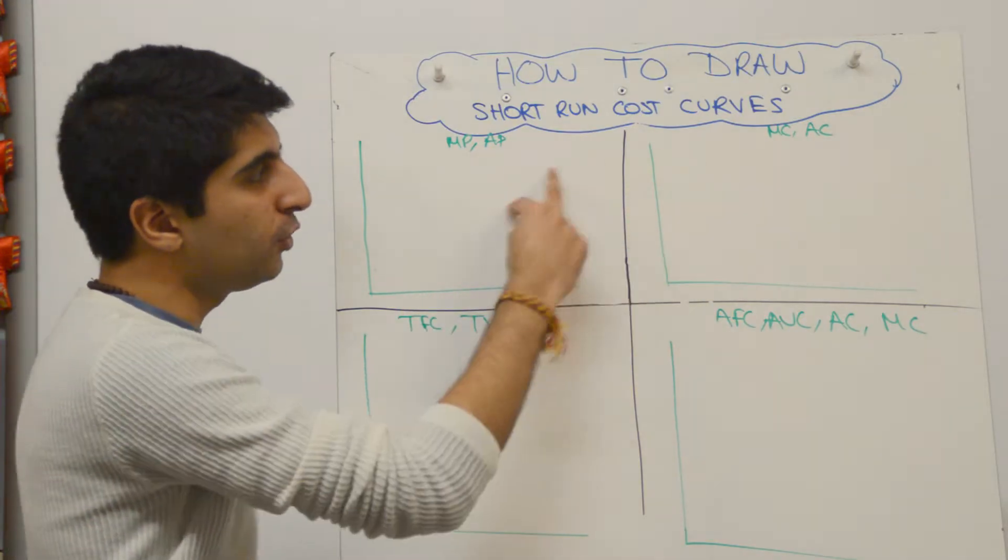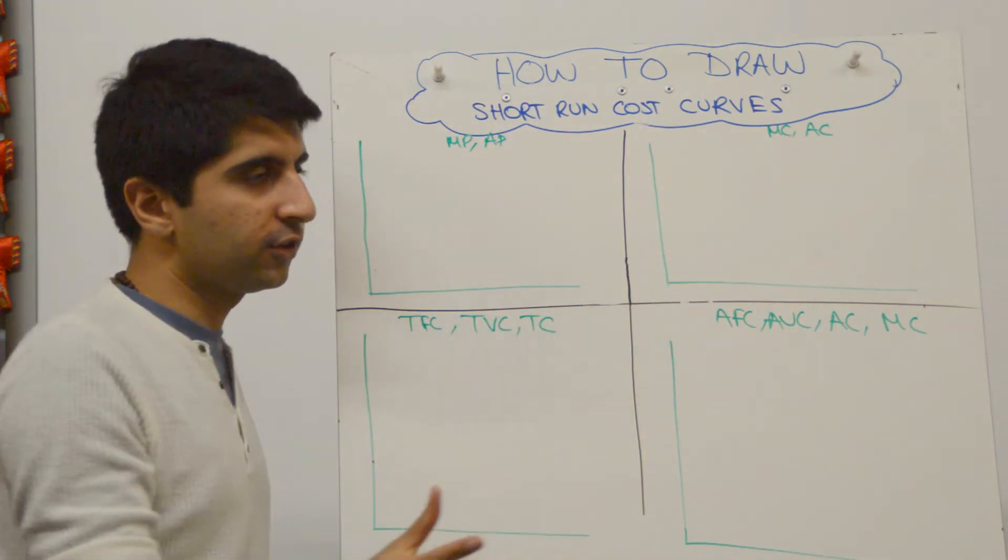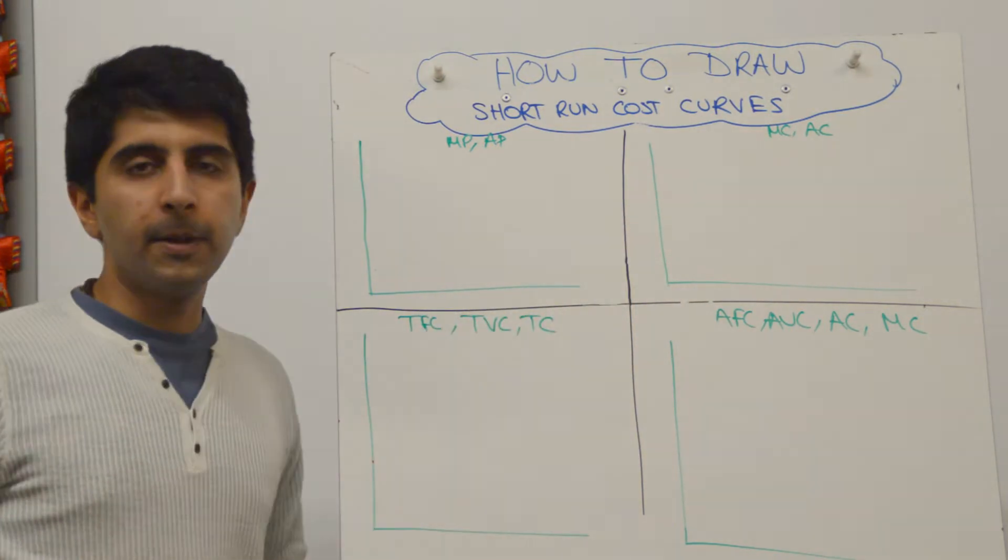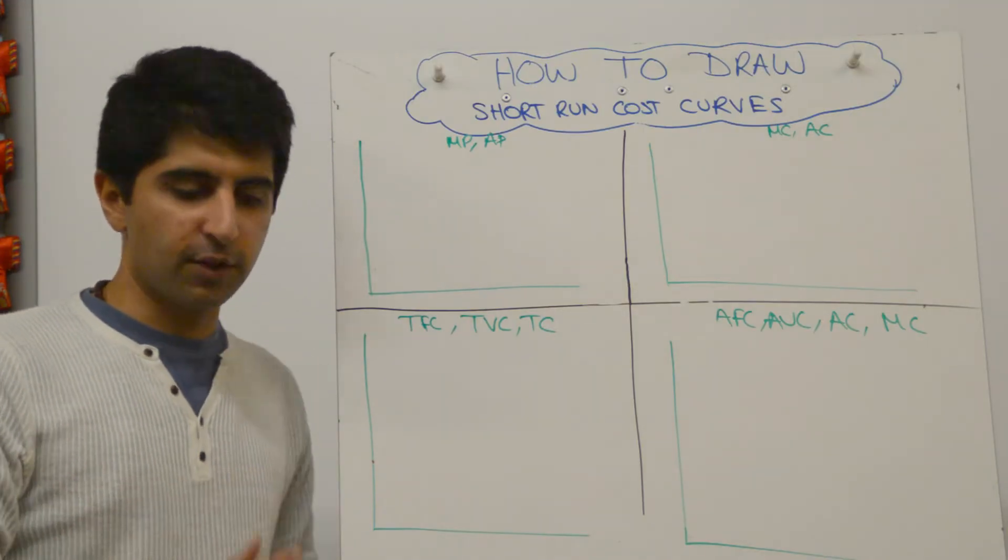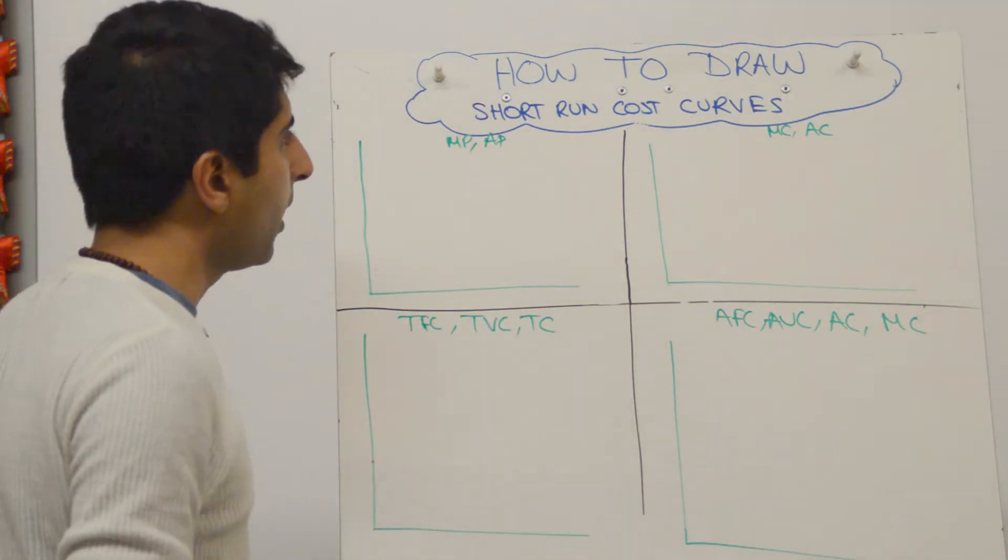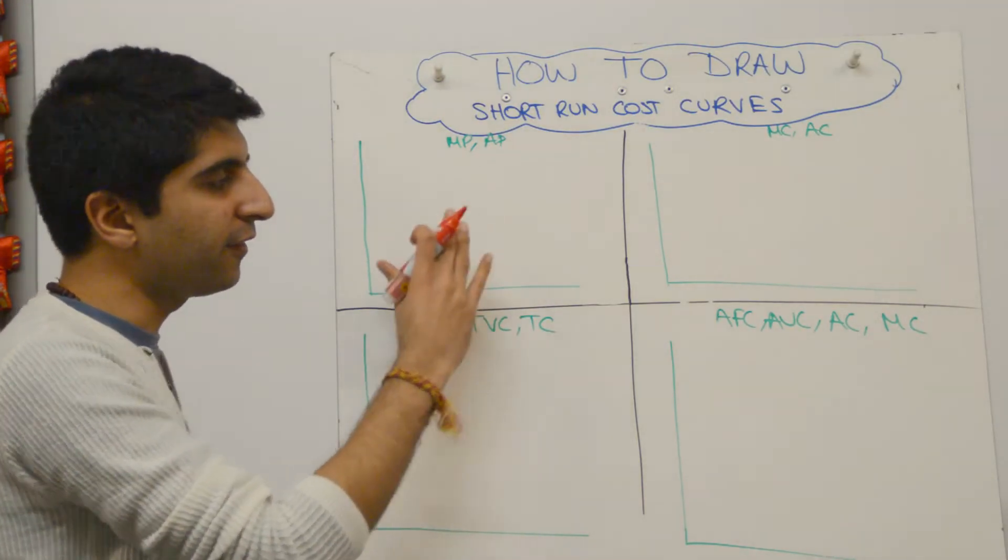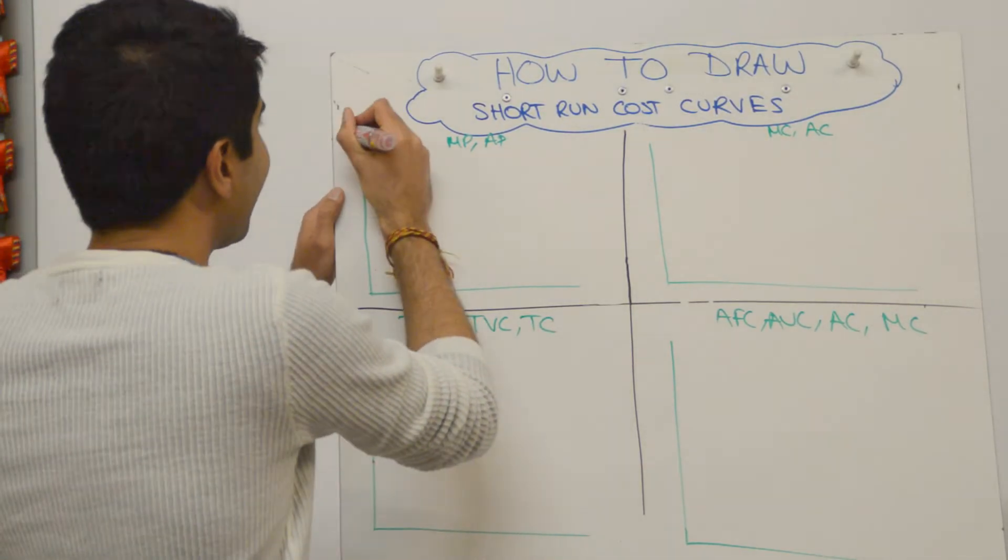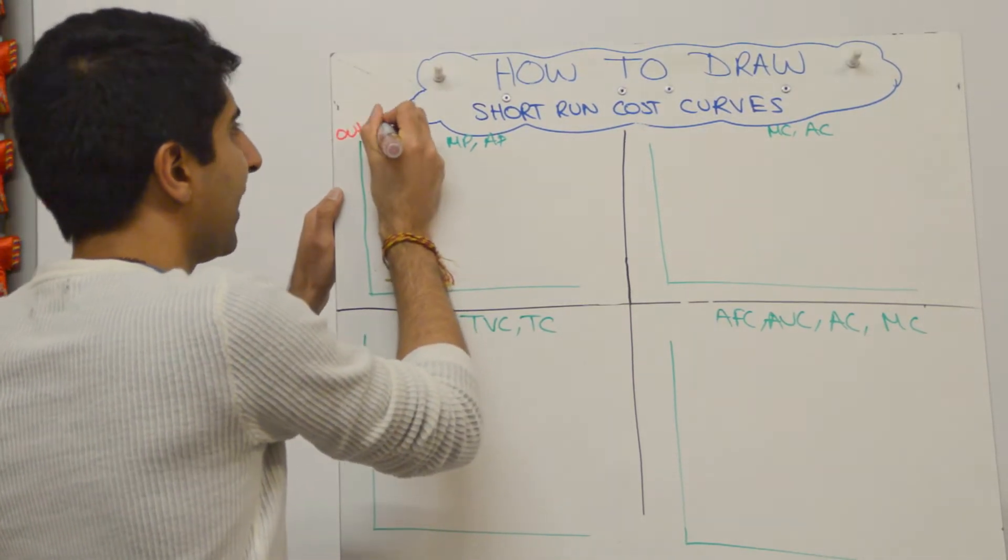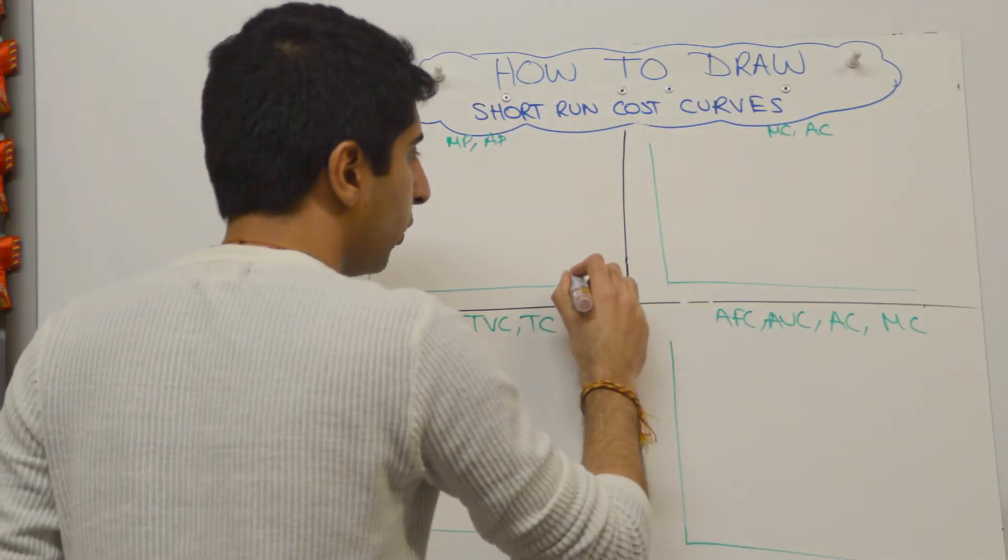We're going to start with two fundamentals: marginal product, average product, and marginal cost, average cost. These are two diagrams which you can really use to illustrate the law of diminishing marginal returns very well. So let's start with marginal product and average product. Because we're looking at product here, it's a different way of labeling the axis to what we're used to. What we plot on the y-axis is output—normally that goes on the x-axis, but here it's going on the y because on the x we have the quantity of labor.